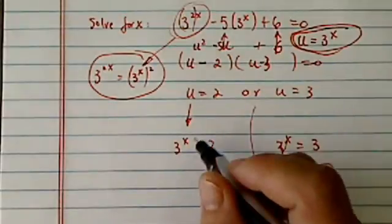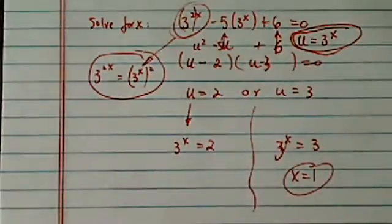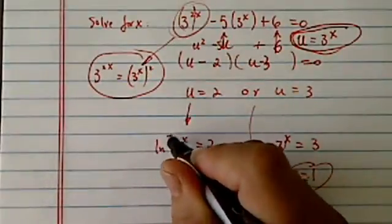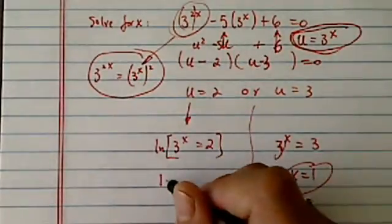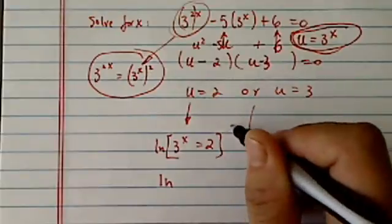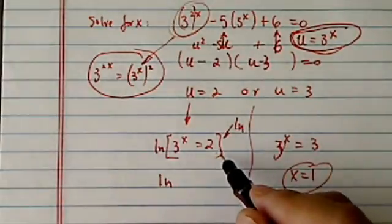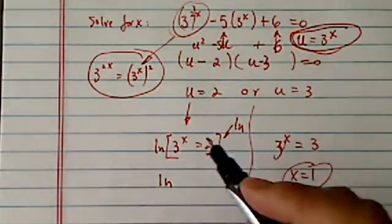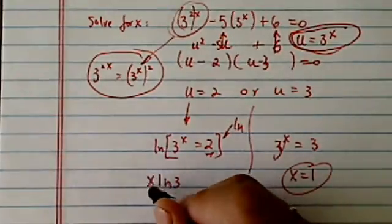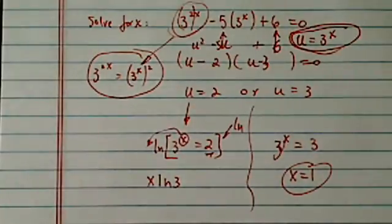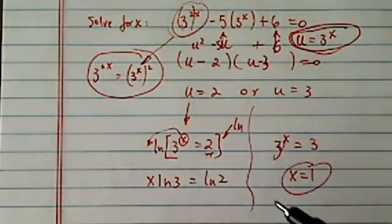Here we have to take a few more steps. Take the natural log on both sides. I tell my students to write natural log on both sides so you don't forget the right-hand side. Natural log of 3 to the x becomes x times natural log of 3, because the exponent comes to the front. This equals natural log of 2.